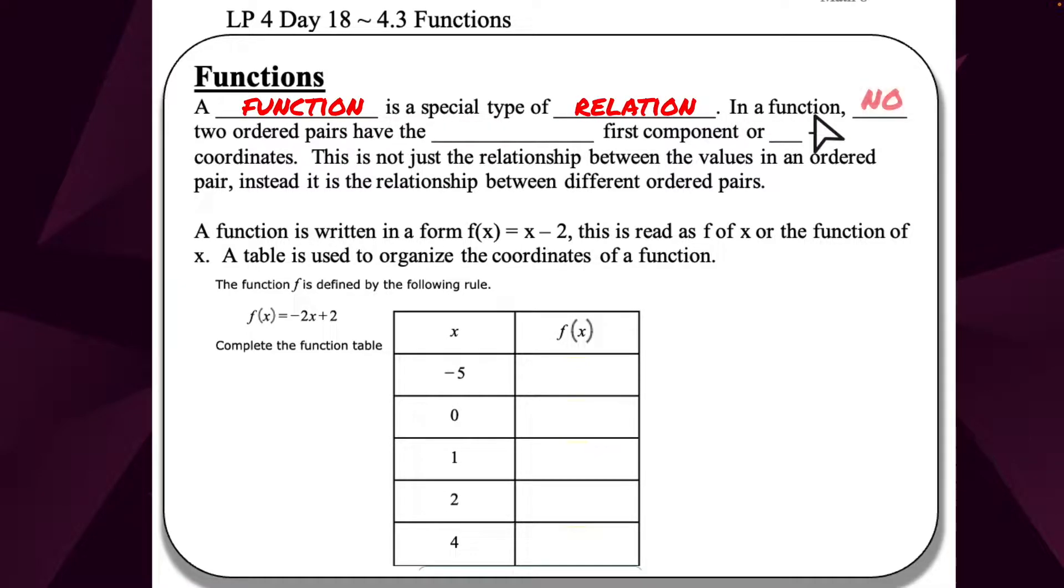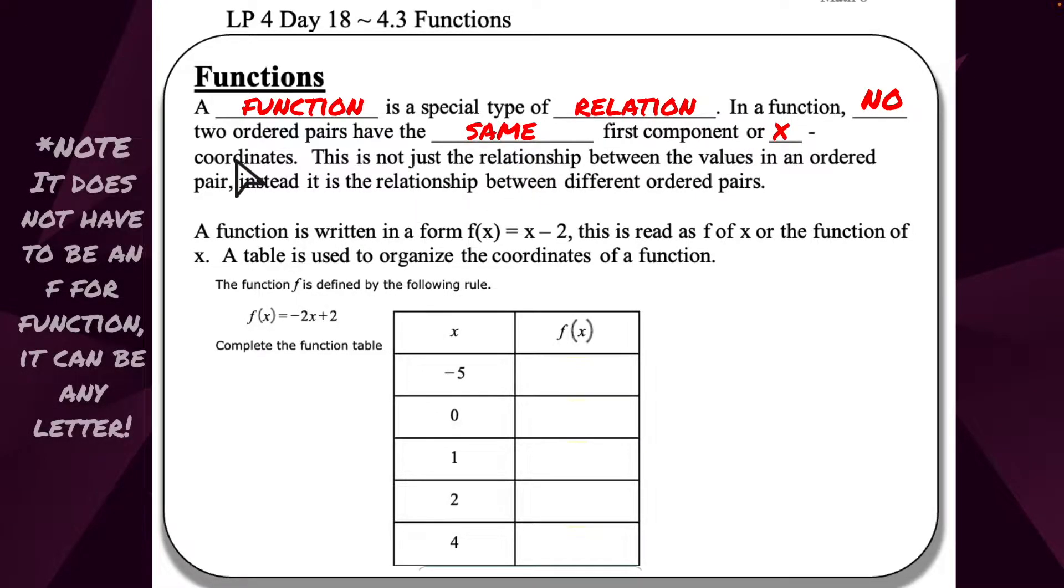In a function, no two ordered pairs have the same first component or x coordinate. This is not just a relationship between the values in an ordered pair. Instead, it's a relationship between different ordered pairs.